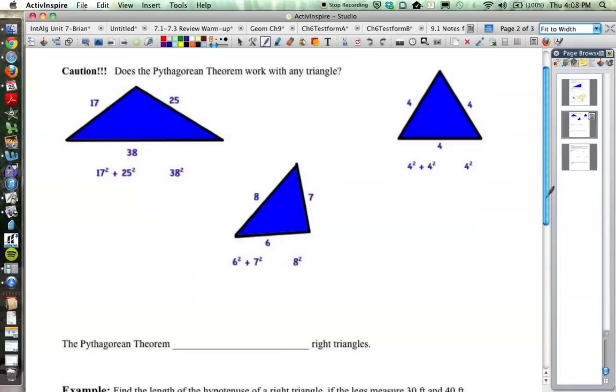So here we have an obtuse triangle with side lengths of 17, 25, and 38. 17 and the 25 are the shorter two, so let's say we have tried to apply the Pythagorean Theorem to that. So a squared plus b squared equals c squared, the two shorter sides squared and added together. We want to see how it compares to the longest side squared.